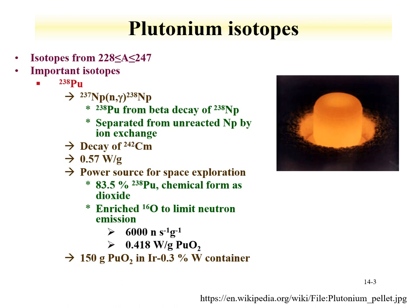If you have oxygen-17 present, the alpha-n reaction — the alpha particle hitting oxygen-17 and producing a neutron — has a relatively large cross-section, so you want to limit neutron production from your source. If you make the plutonium dioxide, you'll have a power source of about 0.4 watts per gram. You can make 150 grams of plutonium dioxide in an iridium container; that heat can be converted to electricity. This is used on spacecraft for missions to planets beyond Mars, and also on the Mars Curiosity rover.